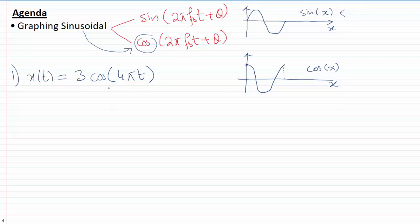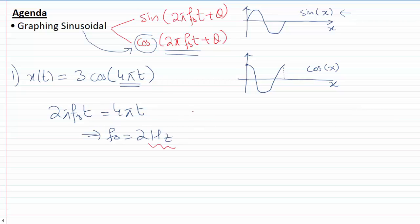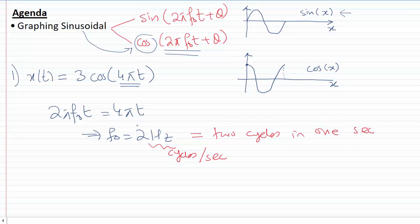If I compare my given sinusoidal with the standard form, I realize that 2πf₀t has to be equal to 4πt, therefore f₀ is 2 hertz. Hertz means cycles per second — that is the number of cycles the waveform completes in one second. Our frequency is 2 hertz, so our sinusoidal is going to complete two cycles in one second.